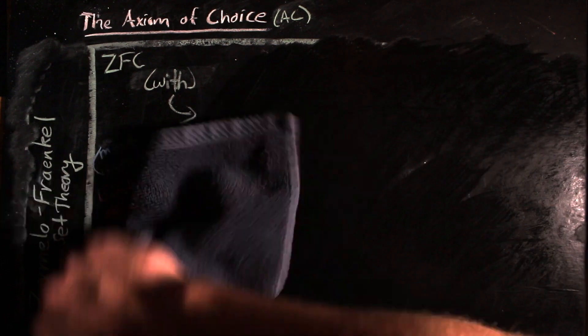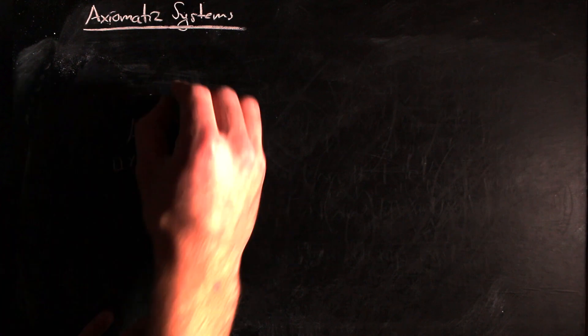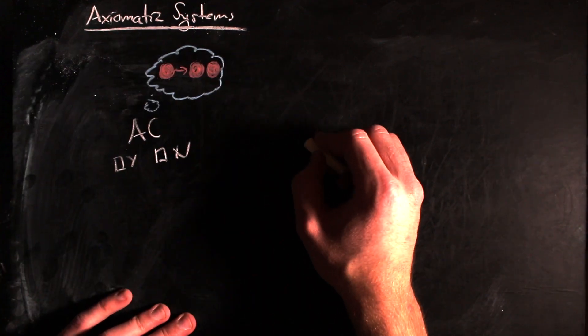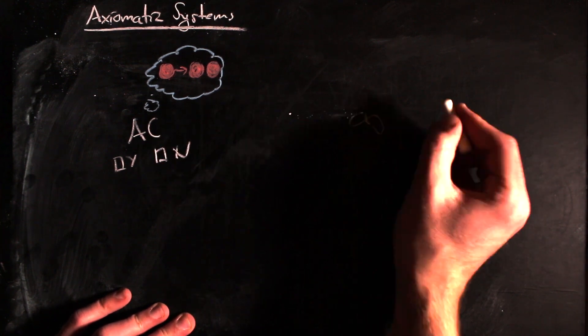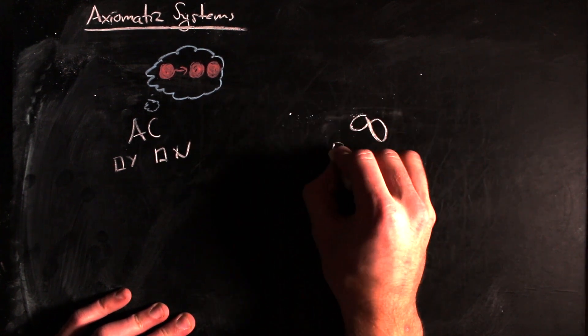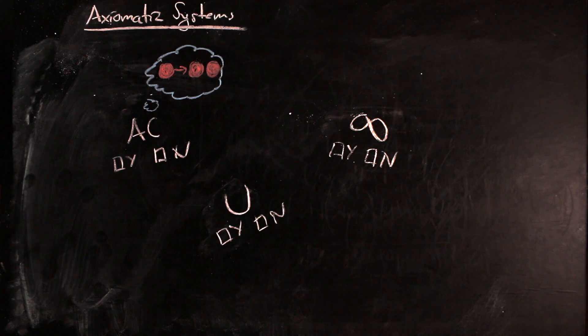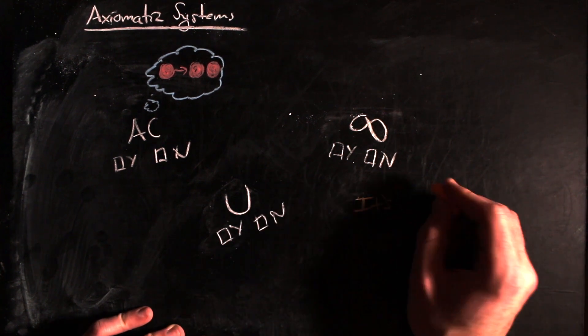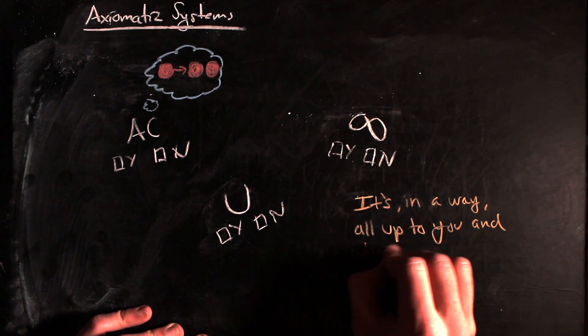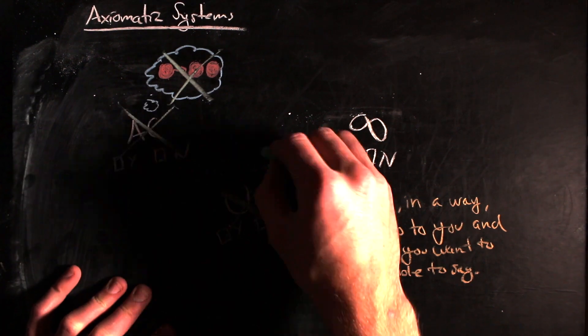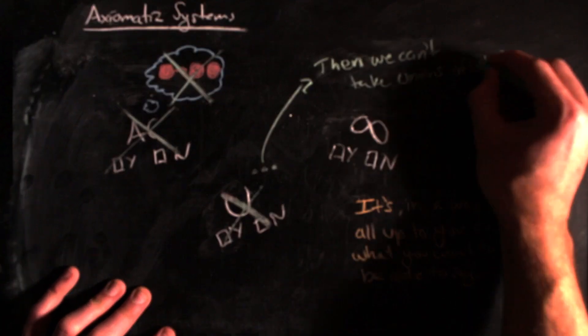The controversy around the axiom of choice essentially comes down to what do we want to be able to say in math. Sure, there are paradoxes that arise from the axiom of choice, but it also allows us to develop some widely utilized and accepted mathematical ideas. The choice to use the axiom of choice is up to the mathematician, just as one may choose not to use the axiom of infinity, or the axiom of union, or the axiom of pairing, or any other Zermelo-Fraenkel axiom. By omitting an axiom, you may remove the realization of paradoxes, but you also might remove the realization of something that is more generally understood as true.